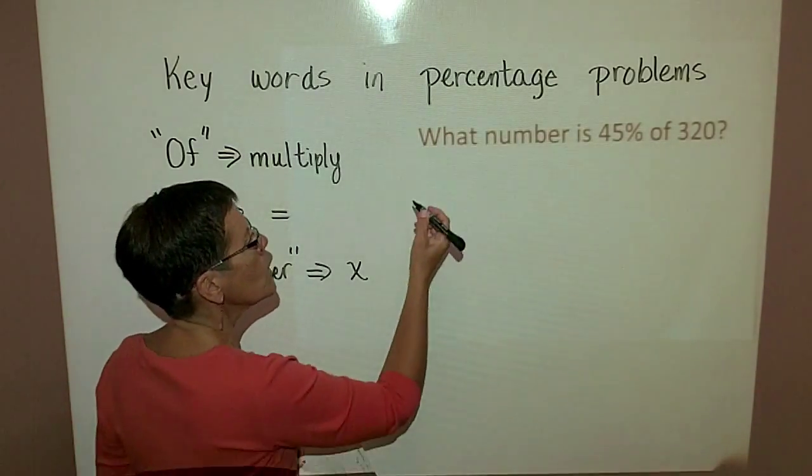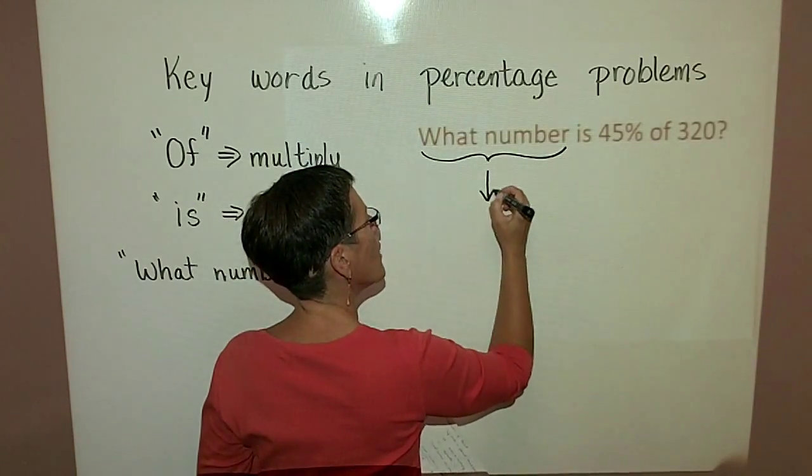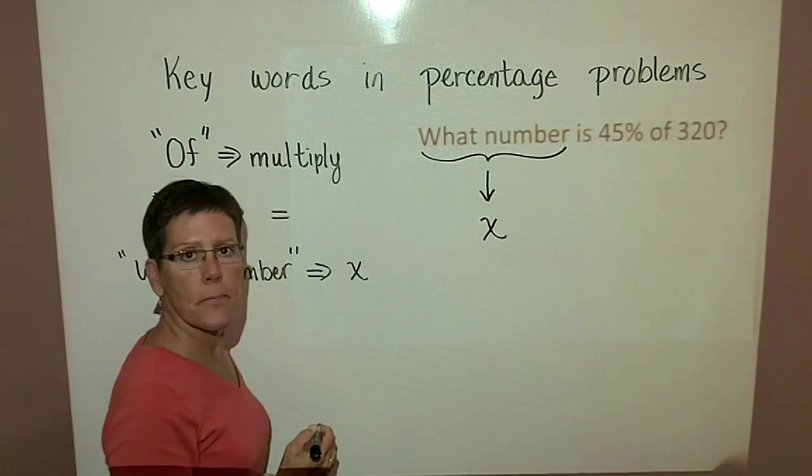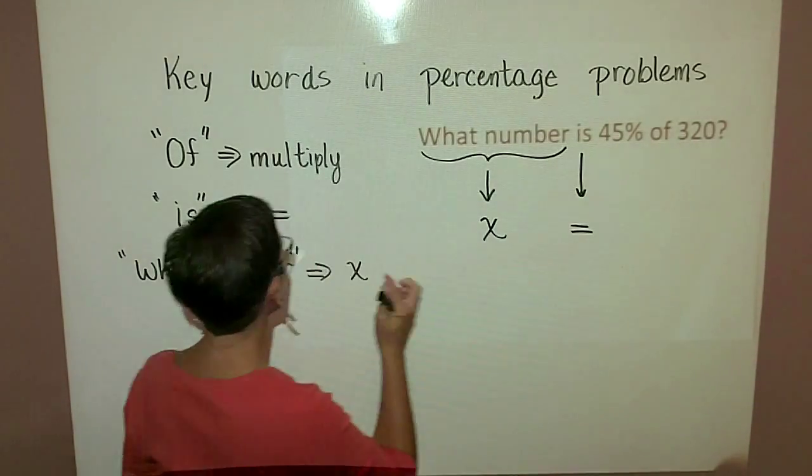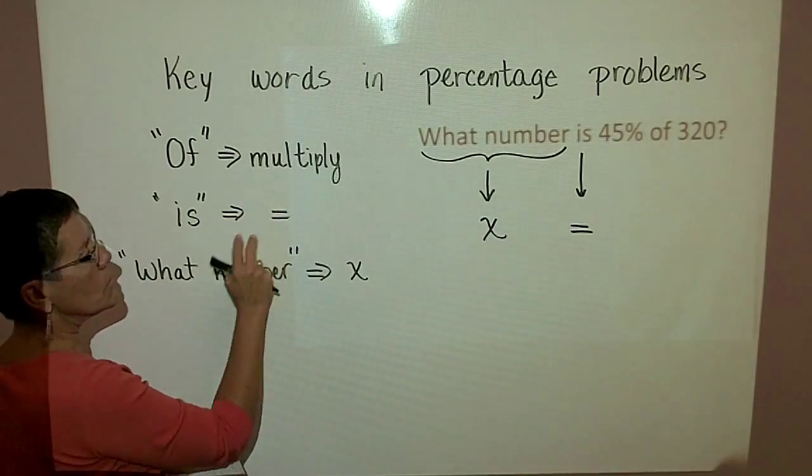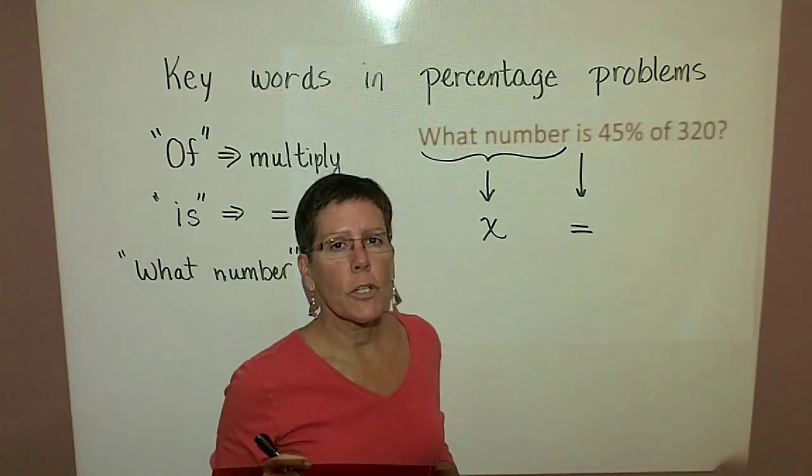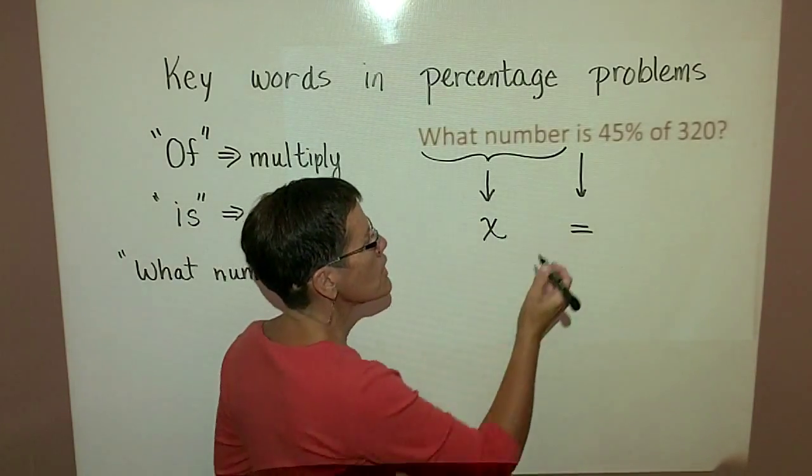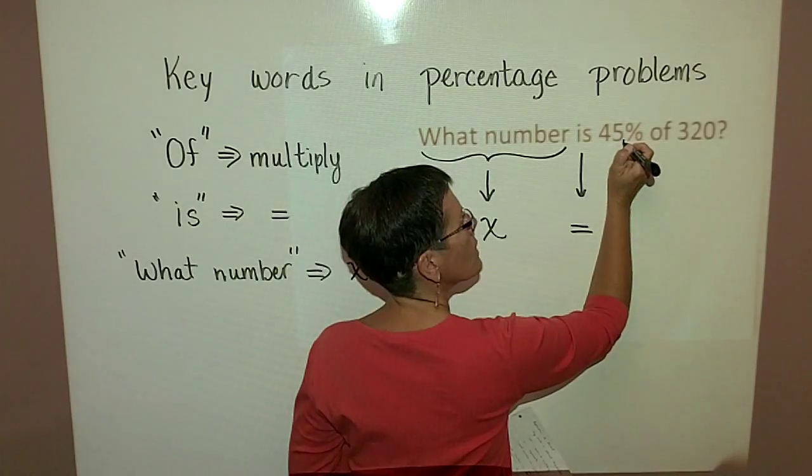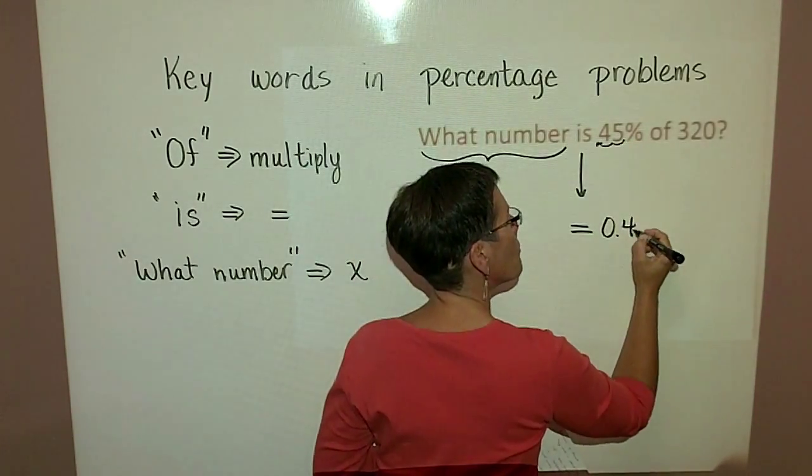So in this particular problem, what number X is, or is equal to, is equal to 45%. When you use 45% in a math problem, you have to use it as a decimal value. So I have to take the decimal place that occurs right here and I have to move it two places to the left and write that as 0.45.